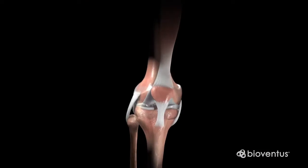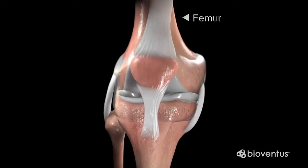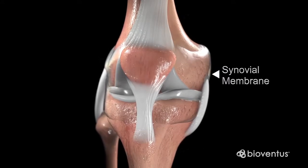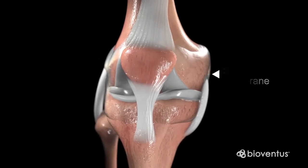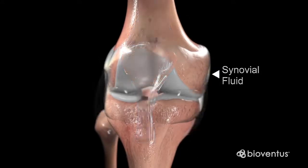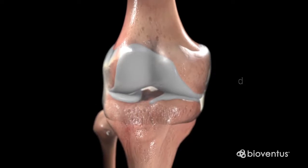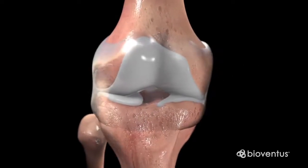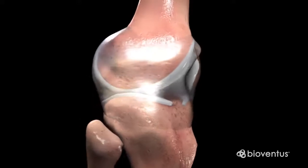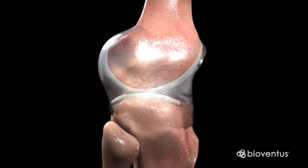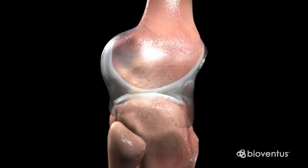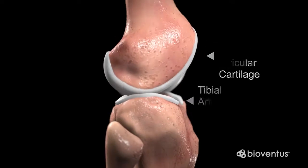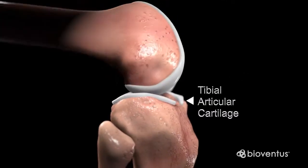The knee joint is made up of the femur, tibia, patella, along with the synovial membrane, which contains synovial fluid. Synovial fluid acts as a lubricant in the knee joint. The end of the femur is covered in articular cartilage, which moves against the articular cartilage of the tibia.